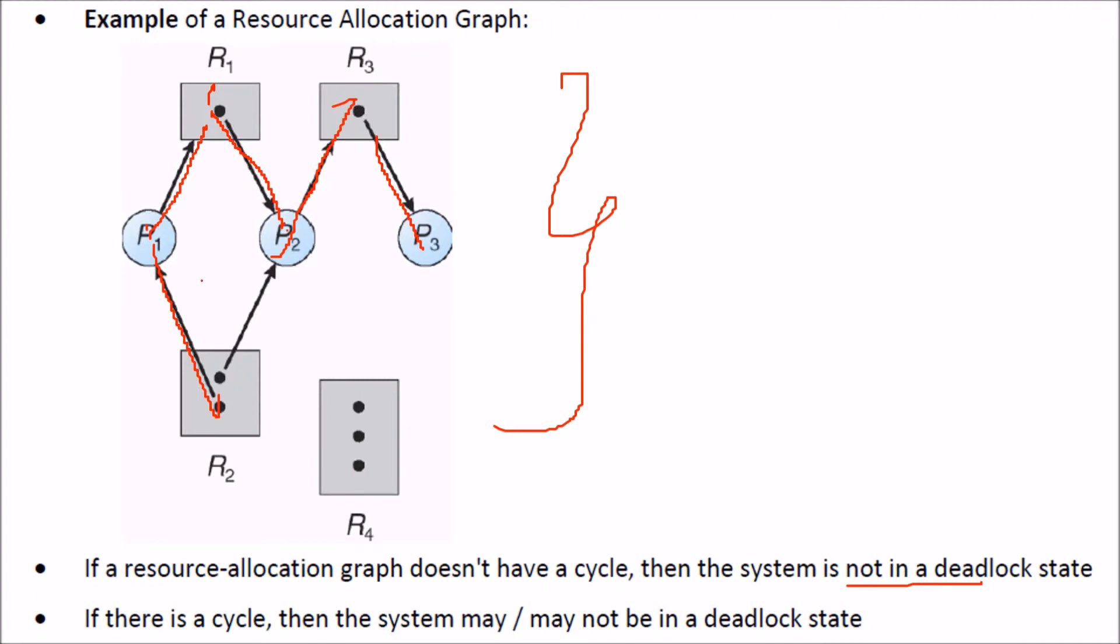But if there is a cycle, if there is cycle, that means this kind of cycle. If you can see, is there any cycle? See, this, this, this, no, there is no cycle. If there is a cycle, then the system may or may not be in a deadlock state.